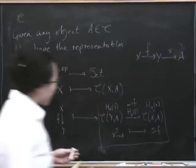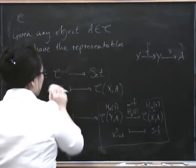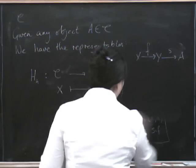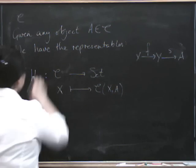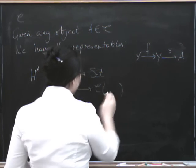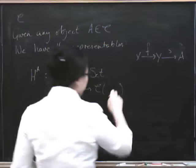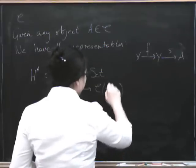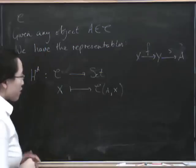Of course, there's a covariant one as well, which we write by an upper script, a superscript. So H upper A, it's now covariant, which means that instead of having X in the first component of the hom set, it's going to be in the second component. So this is the set of morphisms from A to X.